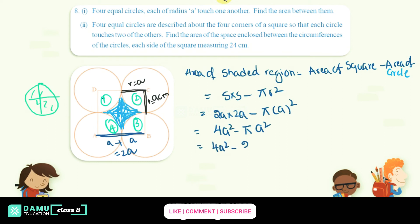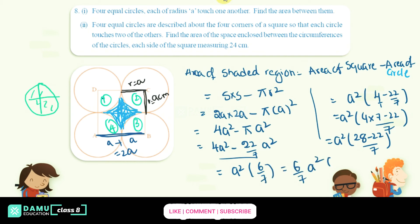Phi r square is a square. So 4a square minus phi a square, that's 4a square minus 22 by 7 a square. Let's take common A square outside. So 4 minus 22 by 7. Taking LCM, 4 into 7 minus 22 by 7. So a square, 4 sevens are 28 minus 22 by 7.